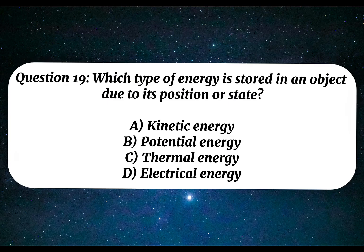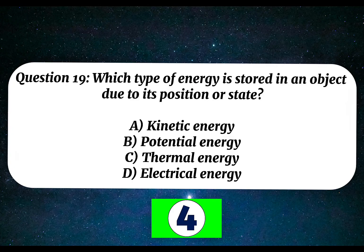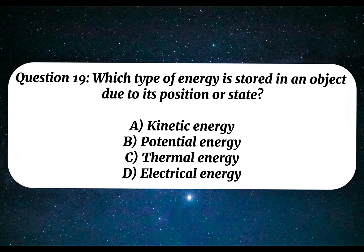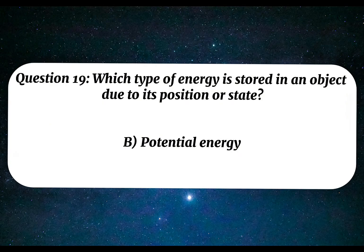Question 19. Which type of energy is stored in an object due to its position or state? A. Kinetic energy. B. Potential energy. C. Thermal energy. D. Electrical energy. Correct answer: B. Potential energy.